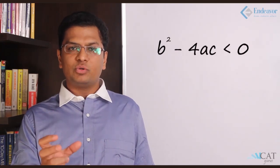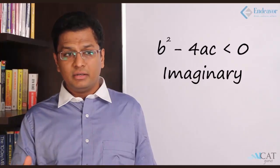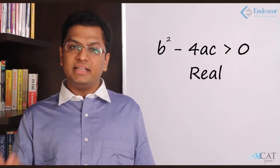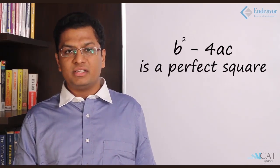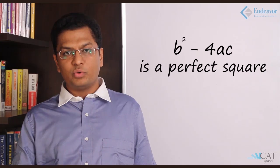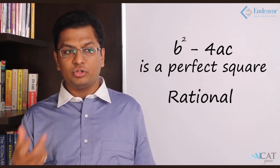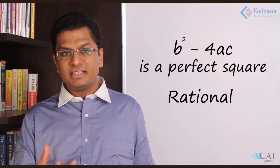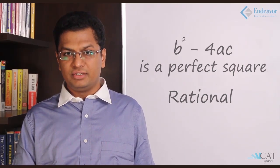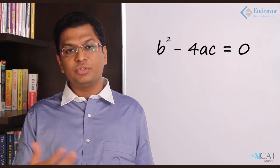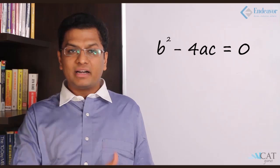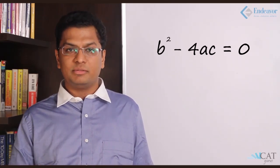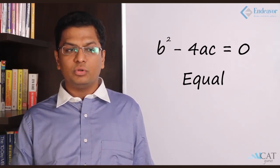Now let us look at how we can use the determinant method to identify the nature of the roots. The determinant is b² - 4ac, and we find its square root to get alpha and beta. If b² - 4ac is negative, the root becomes imaginary. If it is positive, the root is real. If b² - 4ac is a perfect square, the roots are rational; if not a perfect square, the roots are irrational. If b² - 4ac equals 0, then alpha = -b/2a and beta = -b/2a, so both roots become equal.